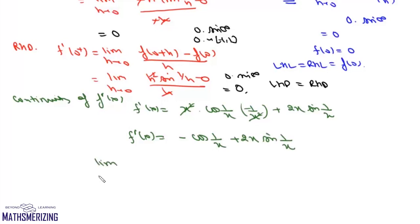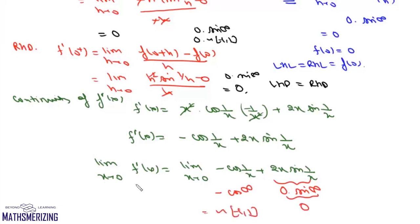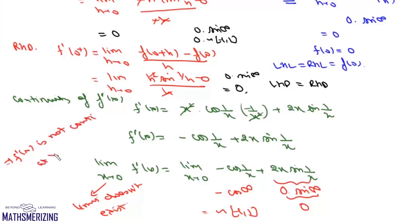Now we evaluate limit x→0 of f'(x) = limit x→0 of [−cos(1/x) + 2x·sin(1/x)]. The term 2x·sin(1/x) is 0·sin(∞) = 0, but −cos(1/x) is −cos(∞), which oscillates between −1 and +1. So this limit does not exist — it is an oscillating value, not a finite number. Therefore f'(x) is not continuous at x = 0.